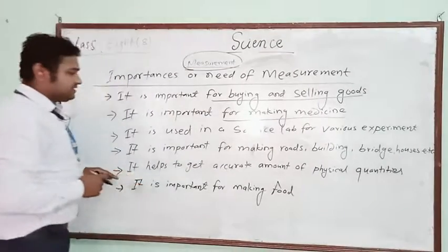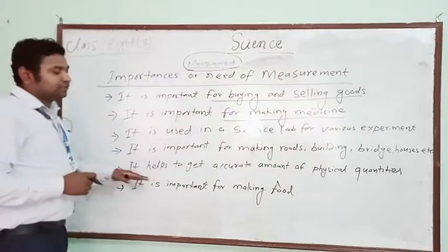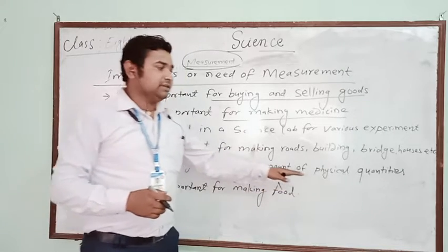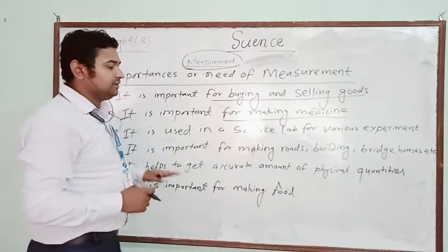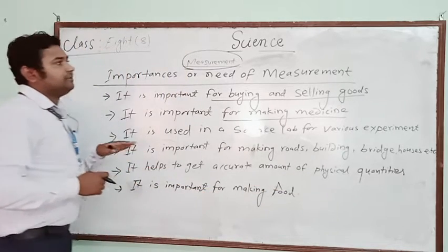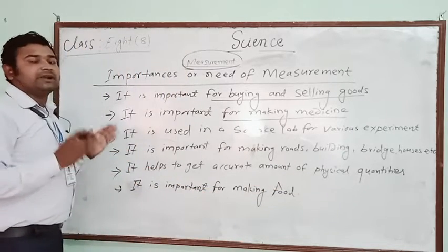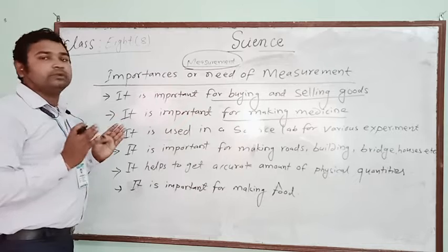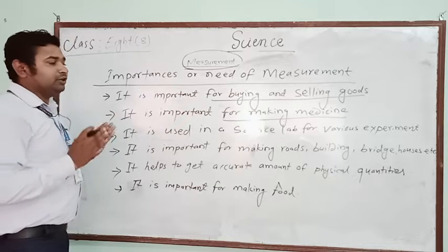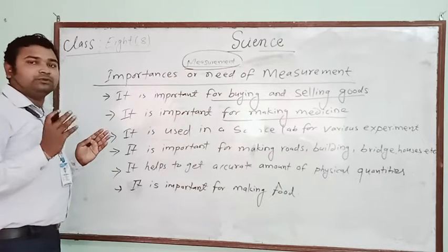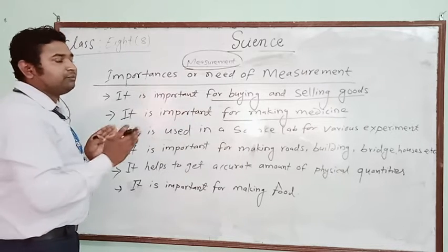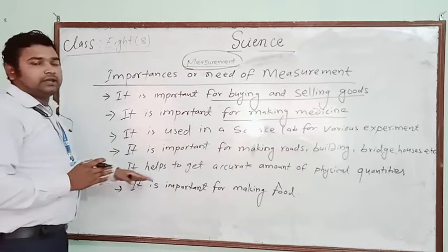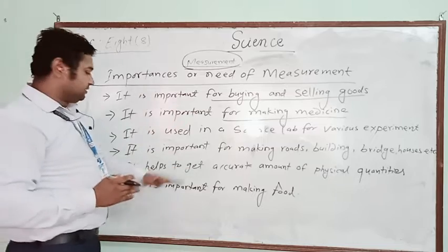Another importance is that measurement helps to get the accurate amount of a physical quantity. Measurement gives a fixed and accurate value. Without proper measurement, you will not get the right amount, so it is important to have adequate measurement.